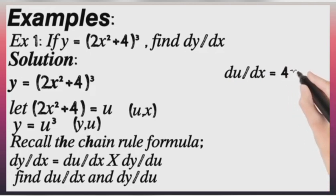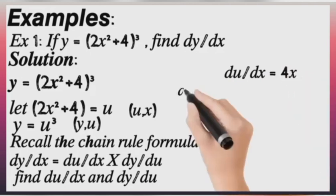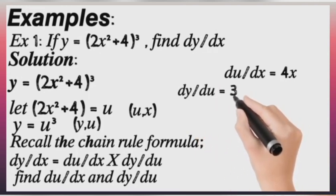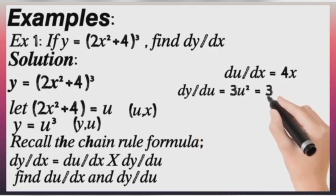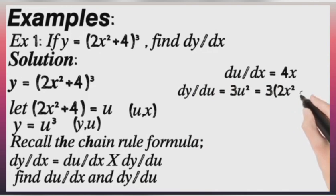Then dy/du now. Since we have y equals to u to power 3, dy/du will give us 3u squared, which is equal to 3u into bracket (2x squared plus 4) raised to power 2. That means we're placing the u back.